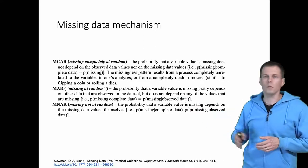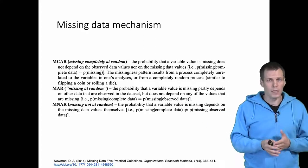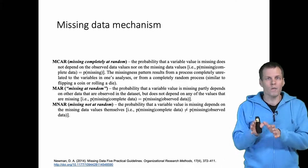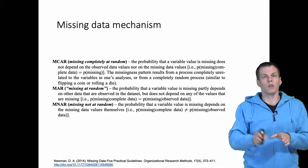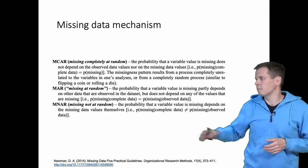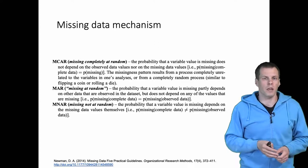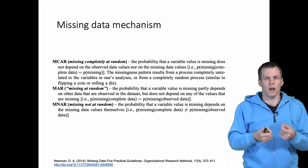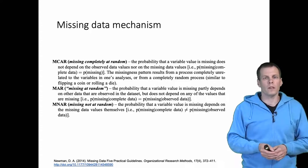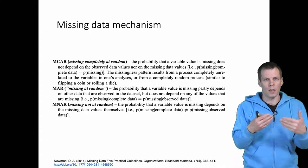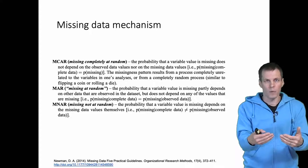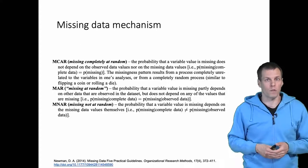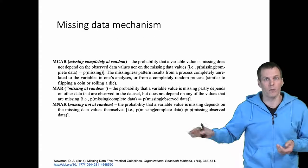Missing at random refers to missingness that can depend on some other variables in the data, but not on the value that is missing. Missing not at random is the worst case — the missingness depends on the actual missing value. For example, whether or how much your salary is can determine whether you go to work, and if you don't work, your salary is not observed. This is a classic case of missing not at random.